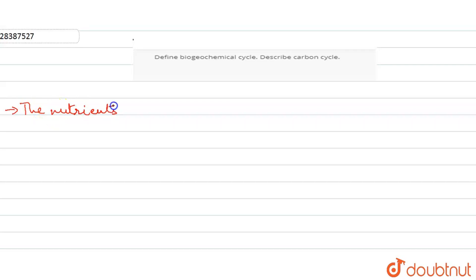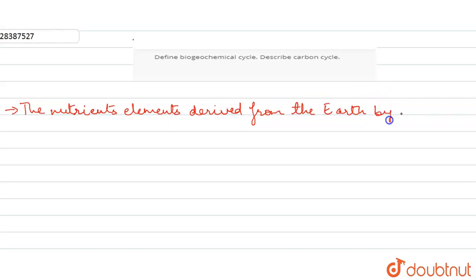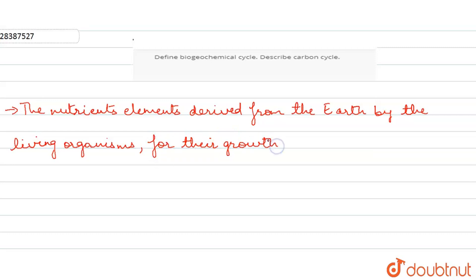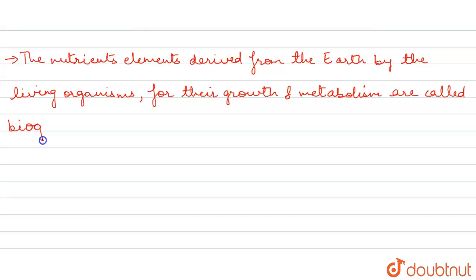The nutrient elements are derived from the earth by living organisms for their growth. Biogeochemicals are nutrient elements because they are derived from the earth, and living organisms use them for their growth and metabolism.